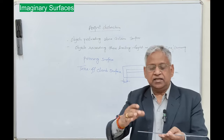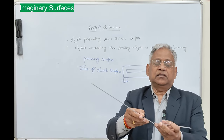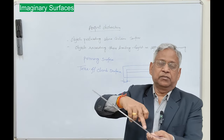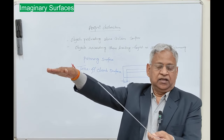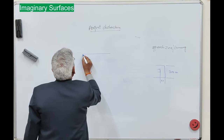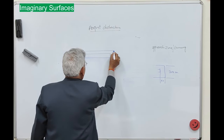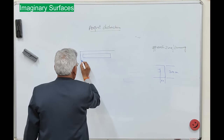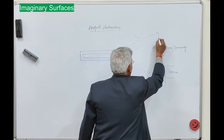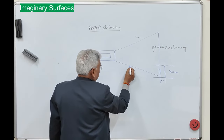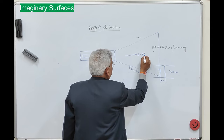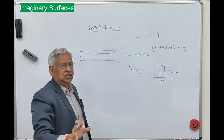This surface diverges on both sides and then finally becomes horizontal. The aircraft takes off from the runway, and you have a primary surface on the runway, then the takeoff climb surface starts like this. The diverging side slope is 10 to 12.5 percent and the upward slope is 2 to 2.5 percent, that is 1 in 40 to 1 in 50.